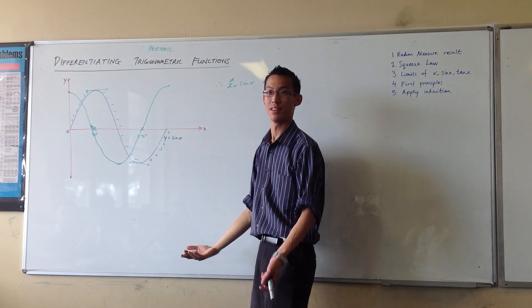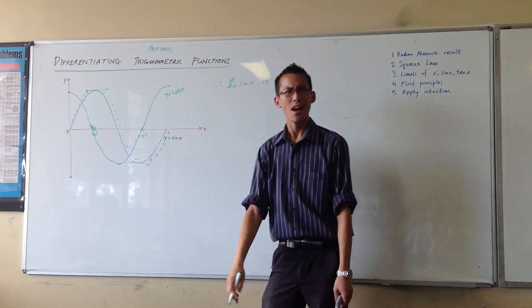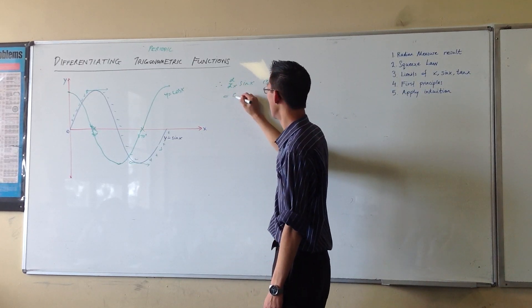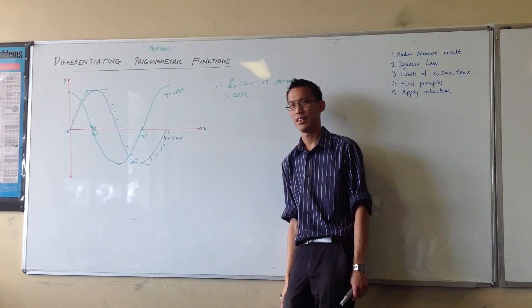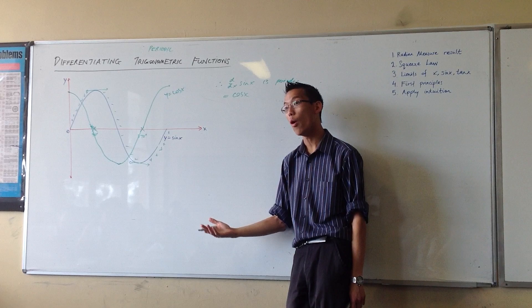Now, what's this green function? This green function is cos, right? So we can say the derivative of sine x, well, it sure looks like cos x. It seems to tick all the boxes.